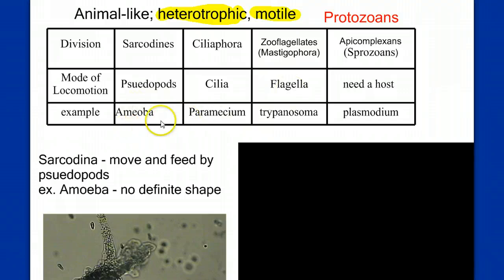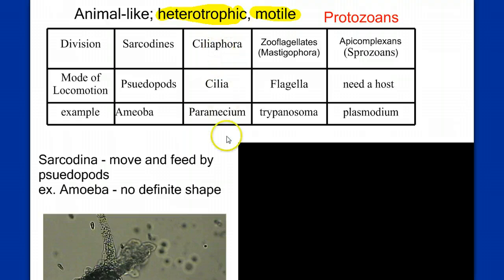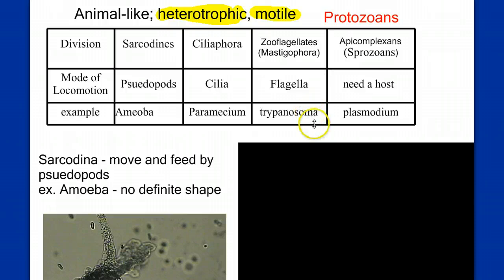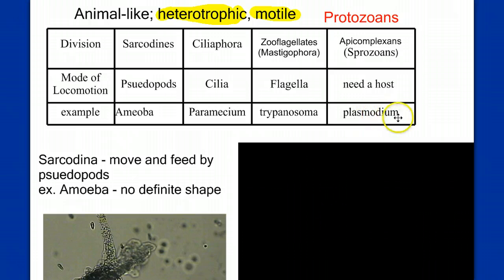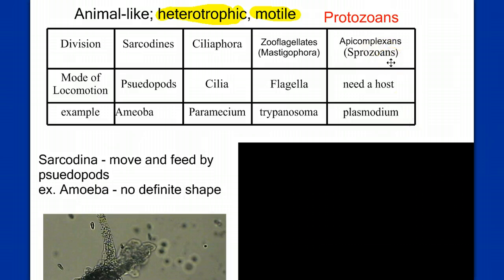We'll talk about an example of each. For sarcodines, we'll use the amoeba as the poster child. We'll use the paramecium for the ciliates. We'll discuss trypanosoma as the poster child for the zooflagellates, and plasmodium as the poster child for the sporozoans or apicomplexans.